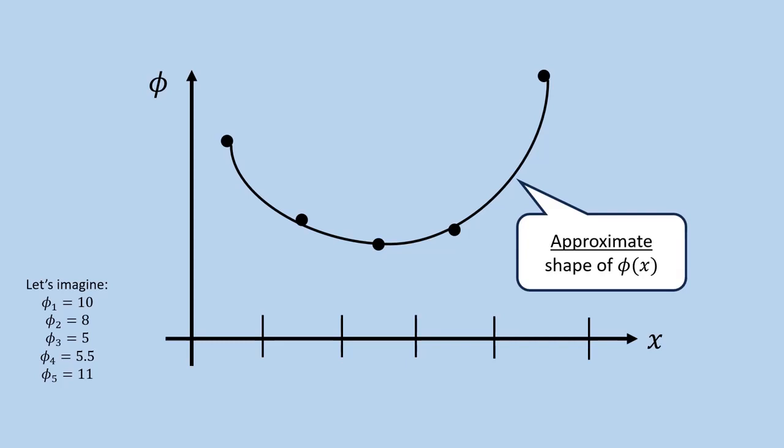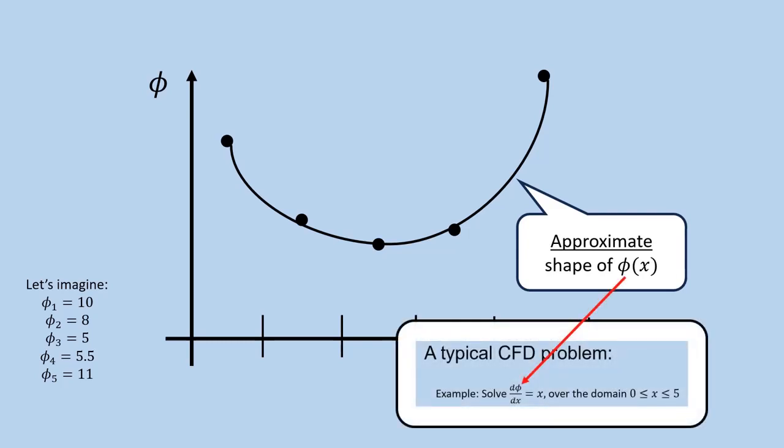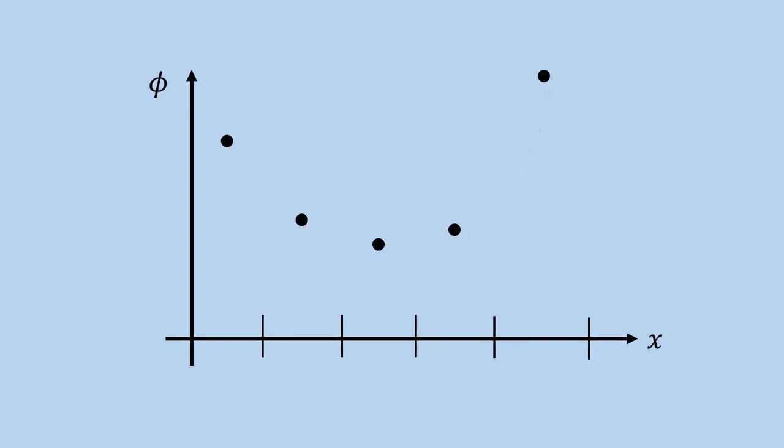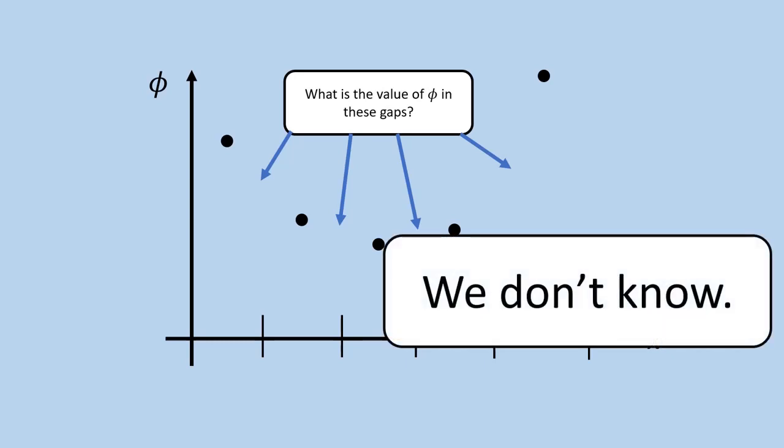Just through observation, you can imagine the approximate shape of phi of x. Remember that this phi solves the differential equation. But keep in mind that this shape of phi is imagined by us. Technically, it's not there. So that begs the question, what is the value of phi in the gaps between each of the known points? Well, the long story short is, we don't know. This happens to be the limitation of CFD. We can only get an approximate idea of how phi varies with time and space.